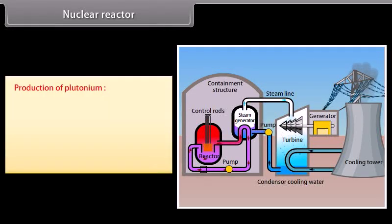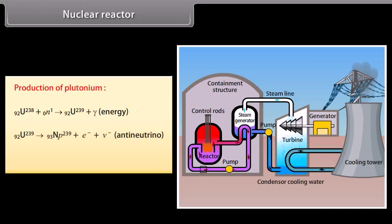Production of plutonium. Some fast neutrons produced in the reactor are absorbed by uranium-238. As a result, it is converted into an unstable isotope uranium-239. Uranium-239 emits a beta particle and is converted to neptunium-239. Neptunium also emits a beta particle and is spontaneously converted into plutonium-239.